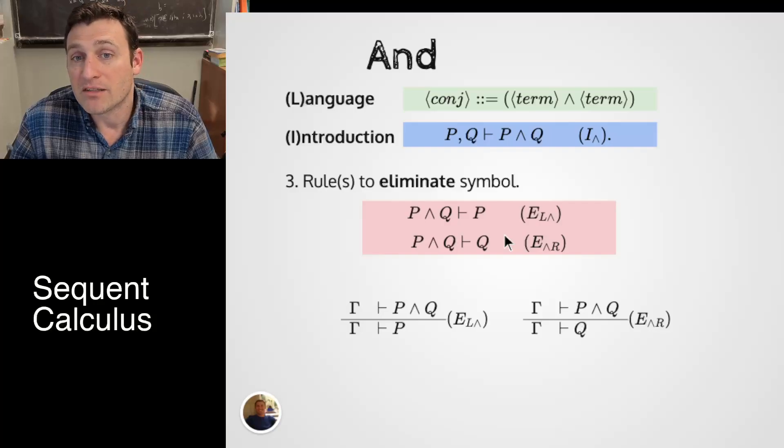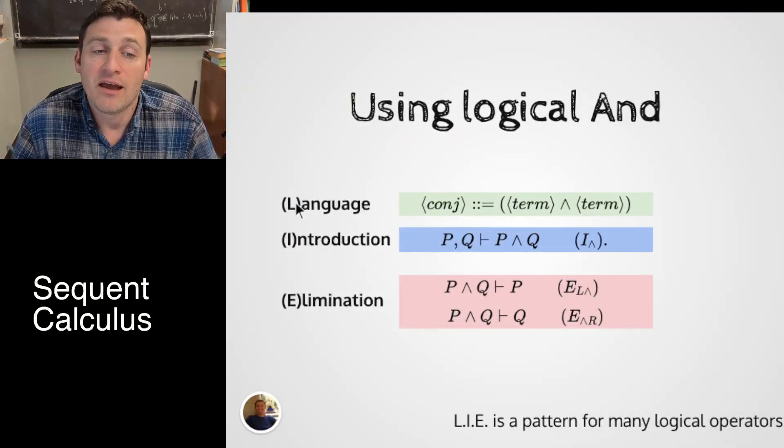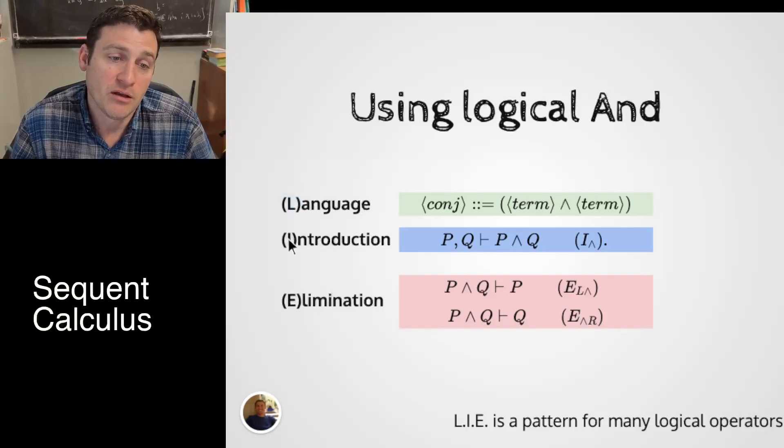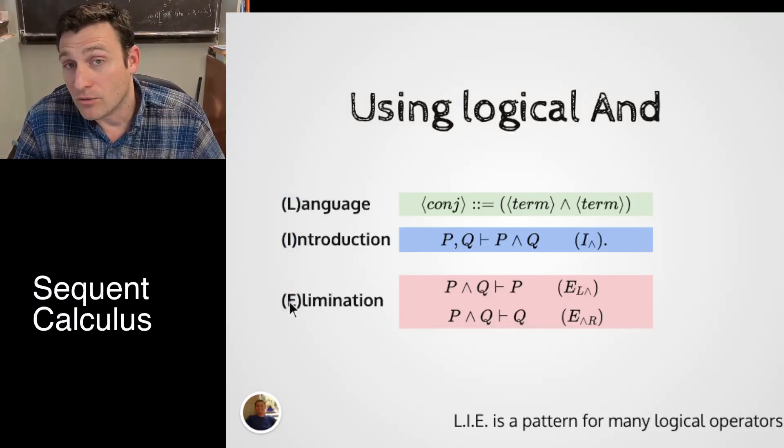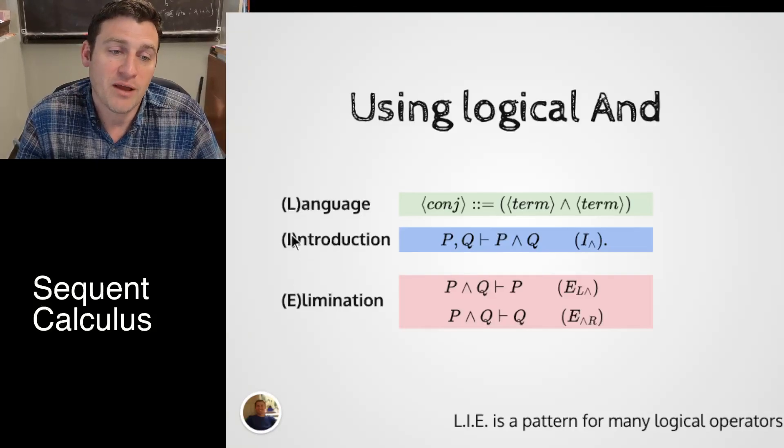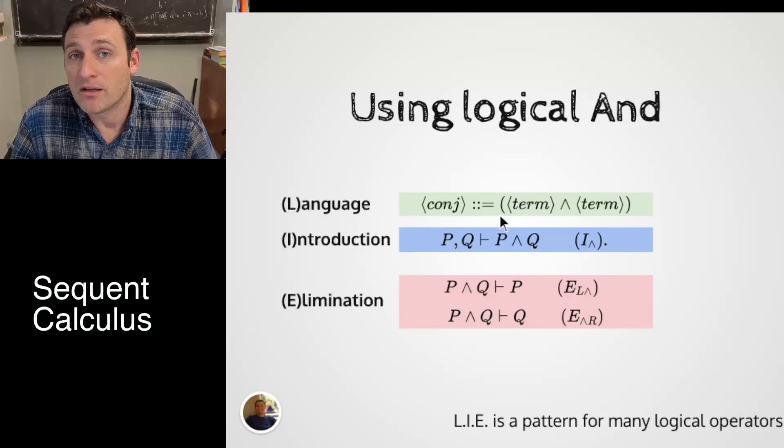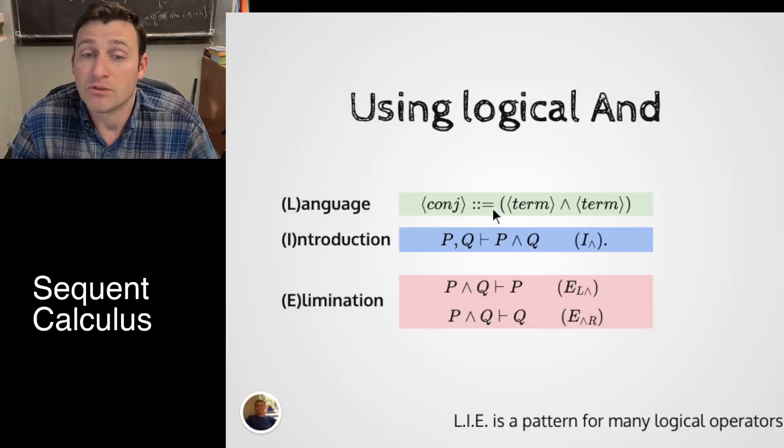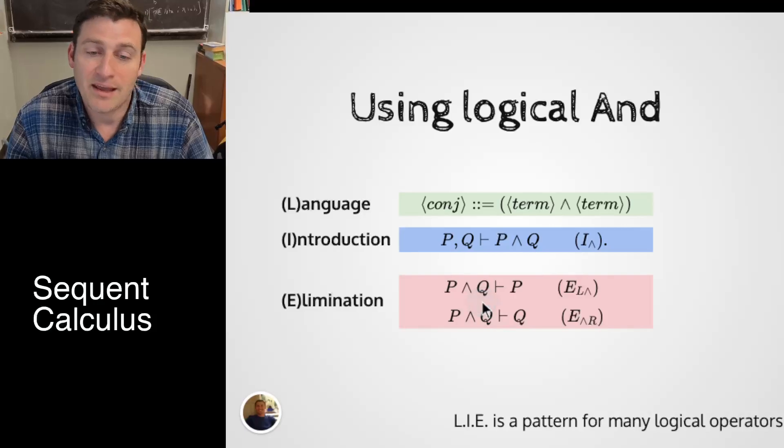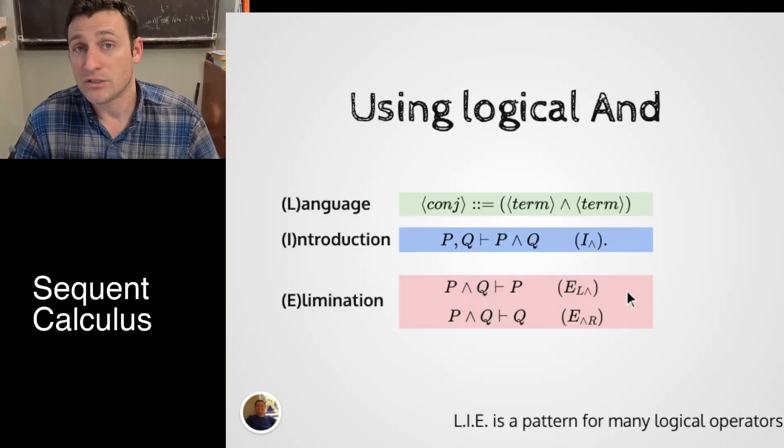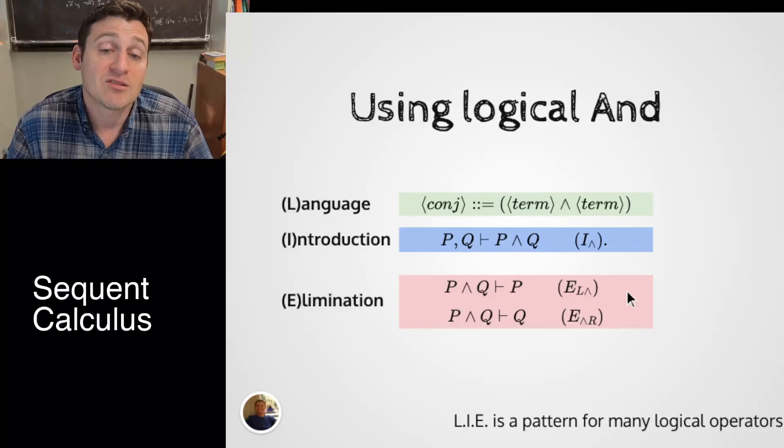If we put this all together we have a nice acronym way to remember these things. Notice that our logical AND has a language to describe it, an introduction rule, and elimination. Going back to how we remember things we can do LIE or LIE. This LIE initial is just going to remind us that to introduce any logical symbols we'll have to pick a language with its grammar, its introduction rules, and its eliminations. And this is a complete description of AND for our purposes. It's all written in the sequent calculus.